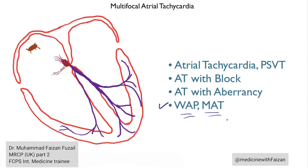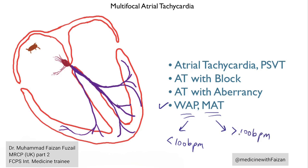In fact, these are two faces of the same problem, except one is faster than the other. By definition, a wandering atrial pacemaker would be less than 100 beats per minute, while multifocal atrial tachycardia would be greater than 100 beats per minute.